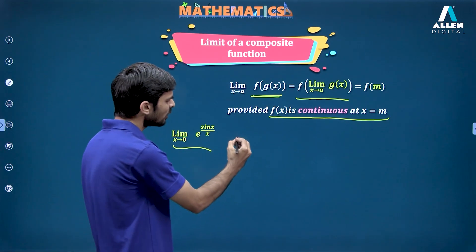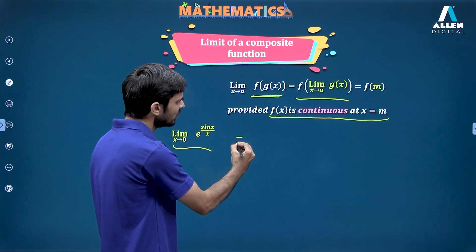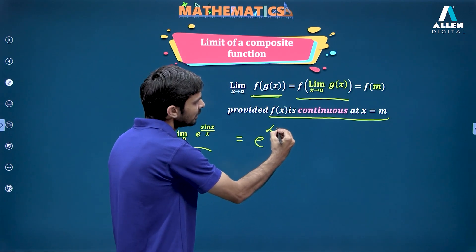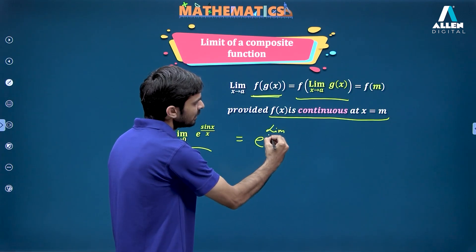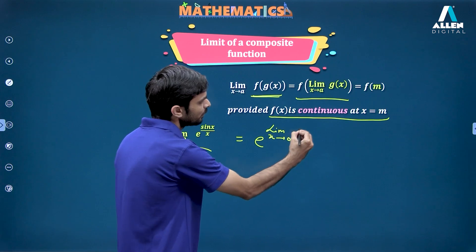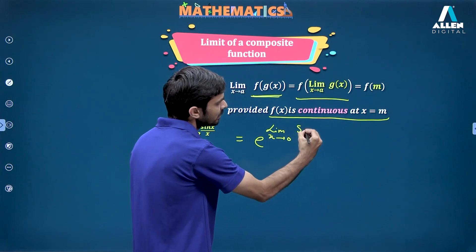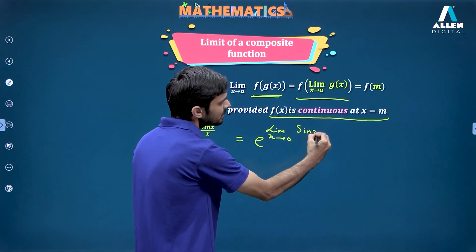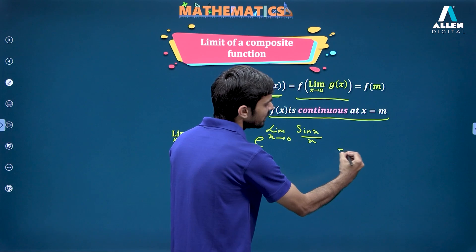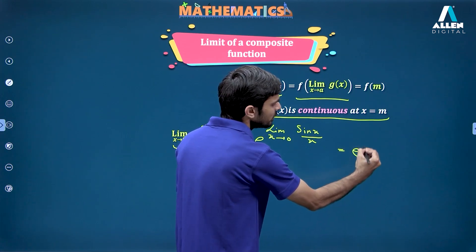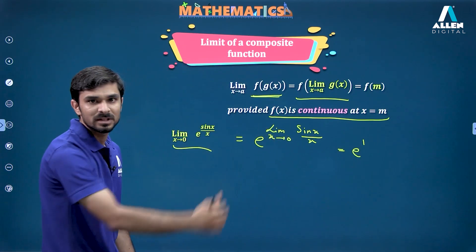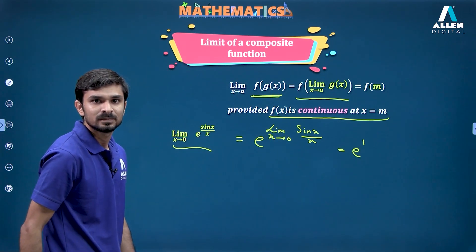So it's perfectly alright to write it as e^(limit x→0 sin x/x). That gives e^1, which is the value of this limit.